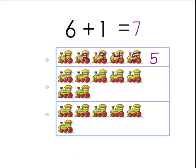This one has 1, 2, 3, 4, 5, 6, 7. Ok, this one has 7 choo choo trains so this is the answer.